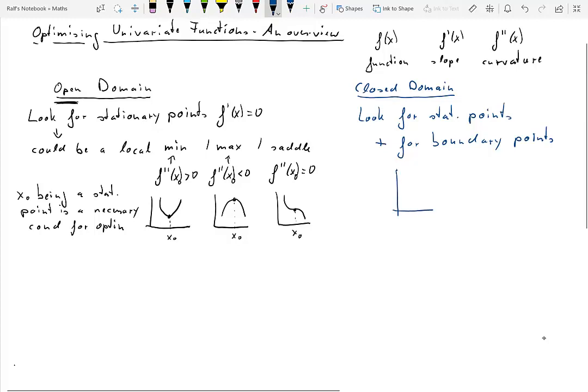So we could have a function which has a particular domain. Let's use some sort of dotted lines here, and the function may look like this.